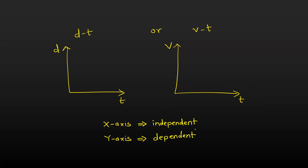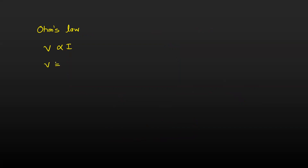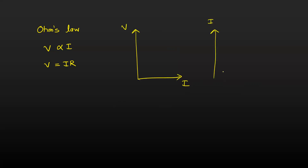In the case of current and voltage, the relationship between them is given by Ohm's law, which states that voltage is directly proportional to current, giving the equation V = IR, where R is resistance. You can plot either voltage versus current or current versus voltage — both are correct — because voltage and current are codependent variables; they depend on each other.